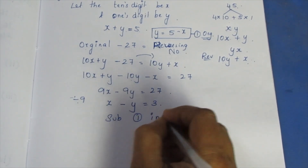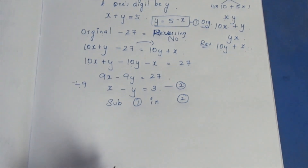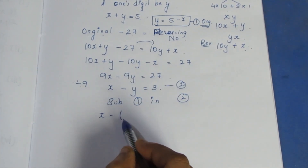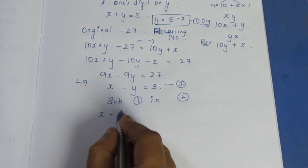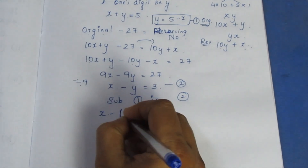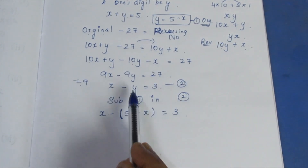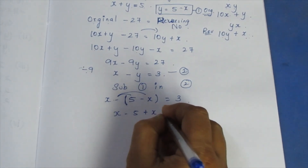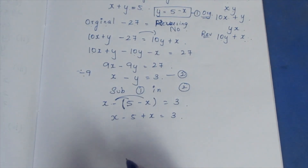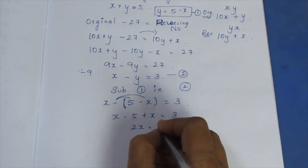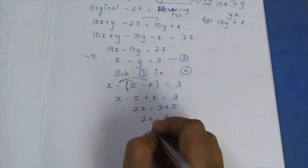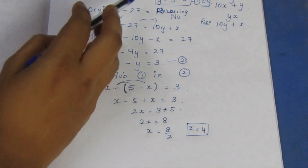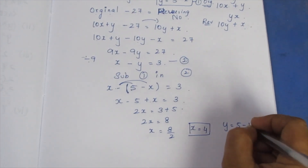Now substitute equation 1 into equation 2. From equation 1, x + y = 5, so y = 5 − x. Substituting into x − y = 3: x − (5 − x) = 3, which gives 2x − 5 = 3, then 2x = 8, so x = 4. Then y = 5 − 4 = 1.